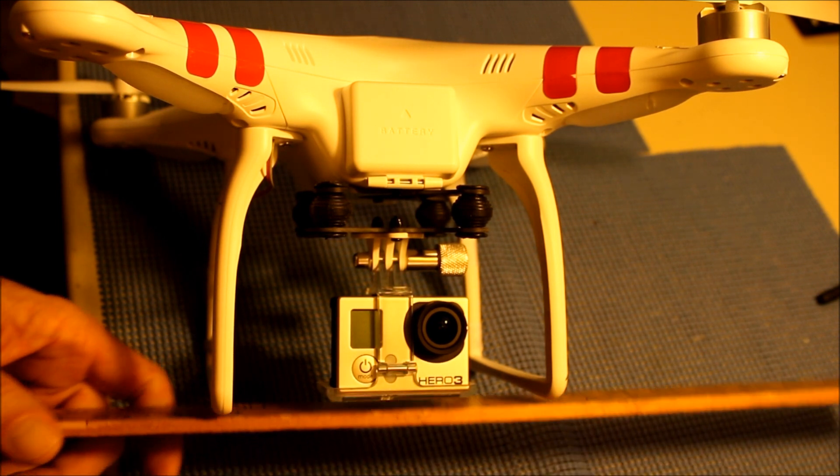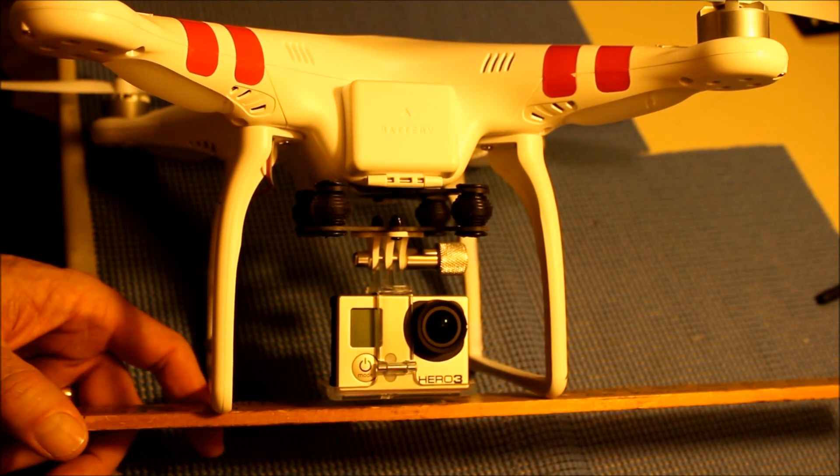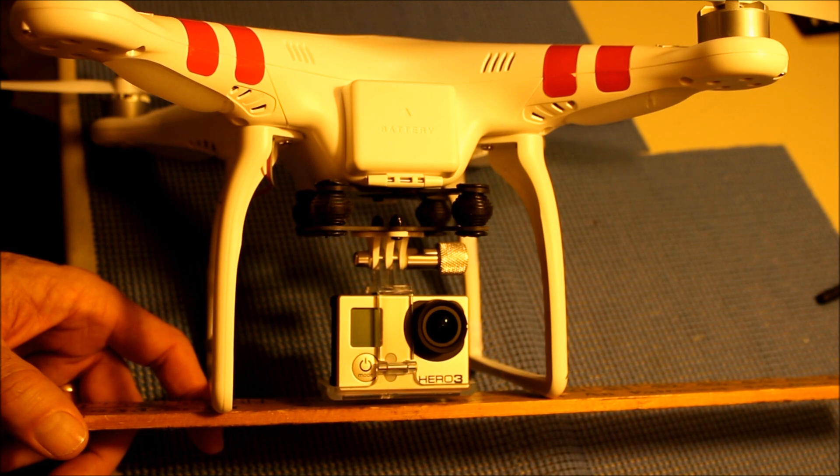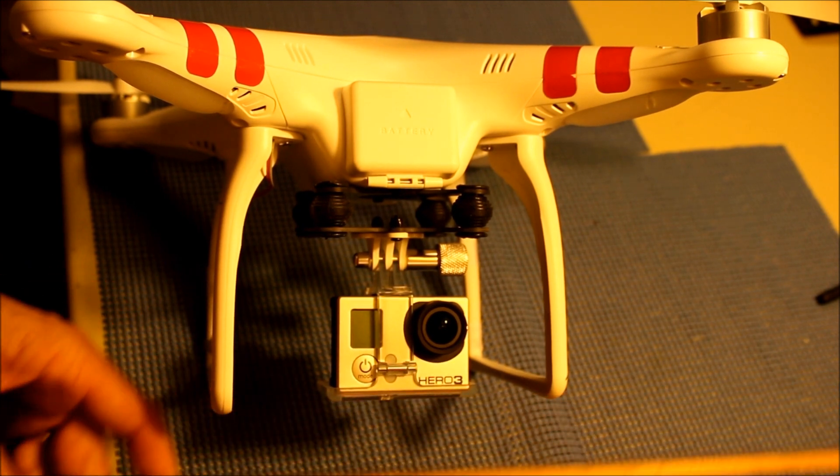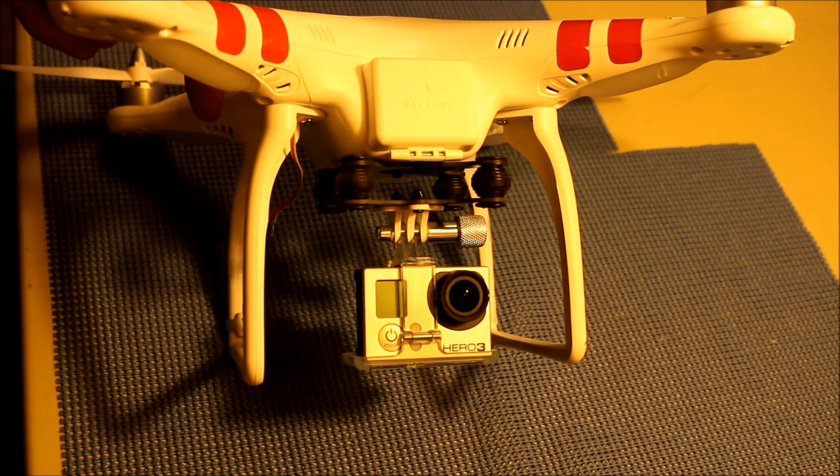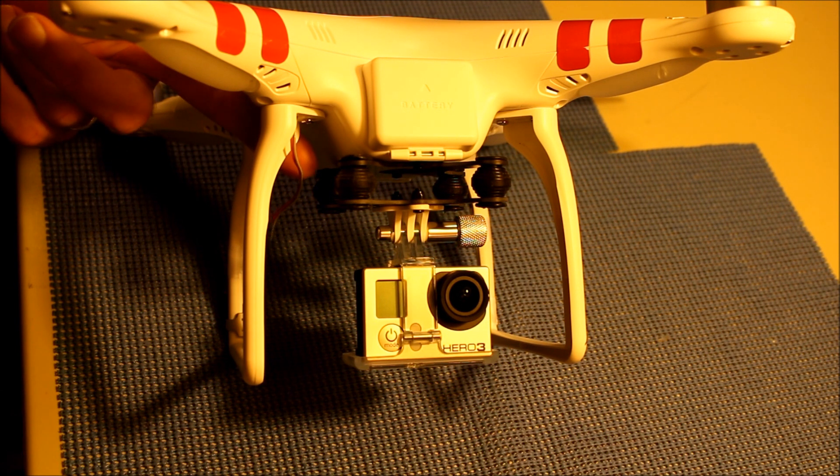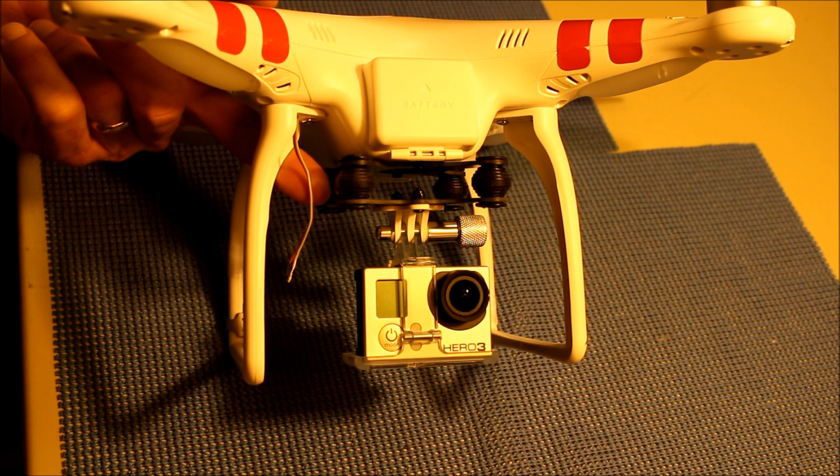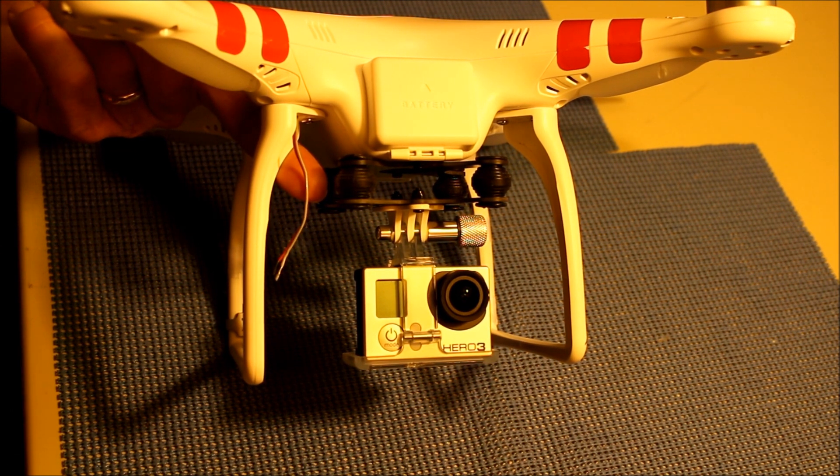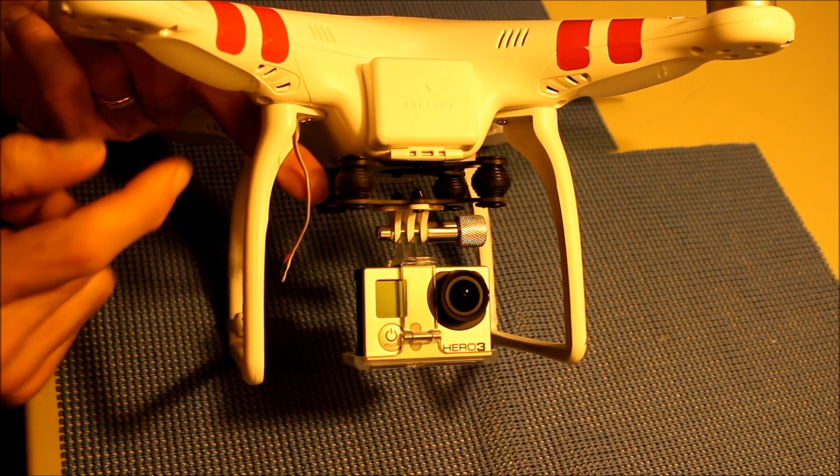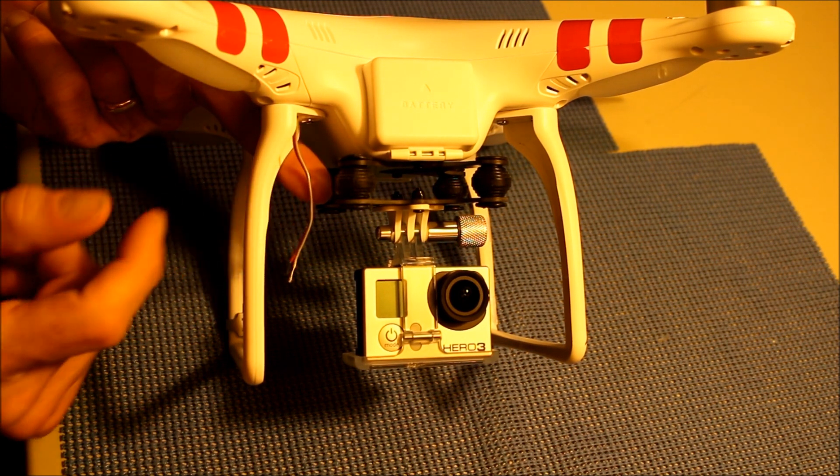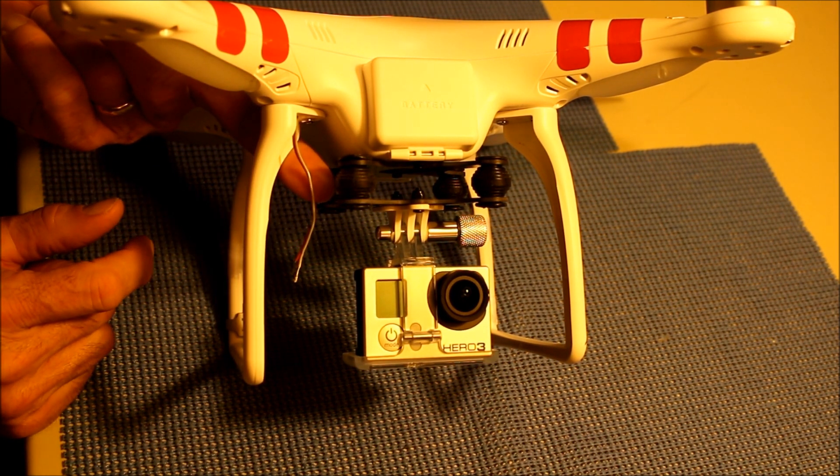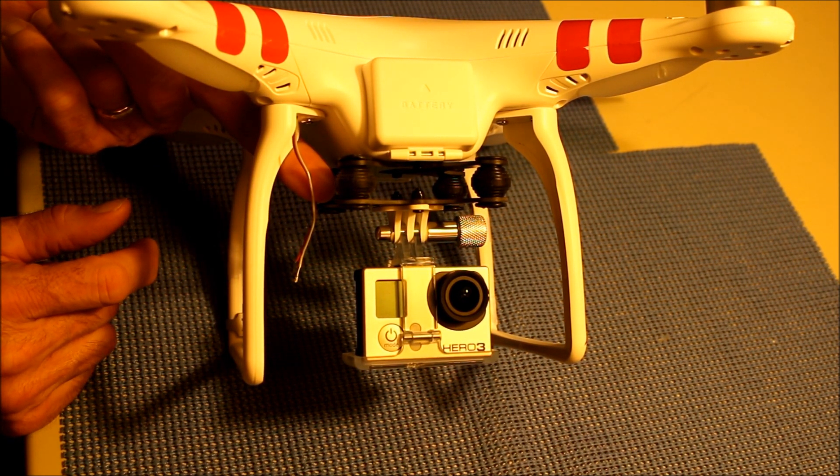You can see with the landing gear here that there's probably another one quarter inch gap. Now I'd like to explain how you get to the auxiliary main power cable that's in the quadcopter. This is the cable here.